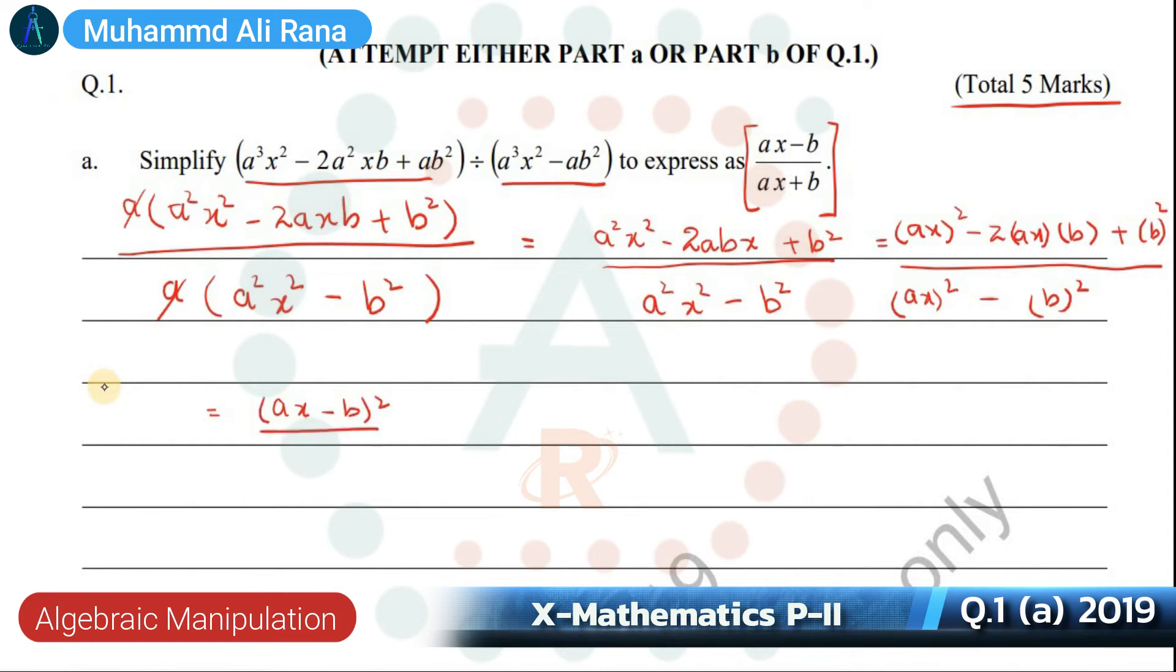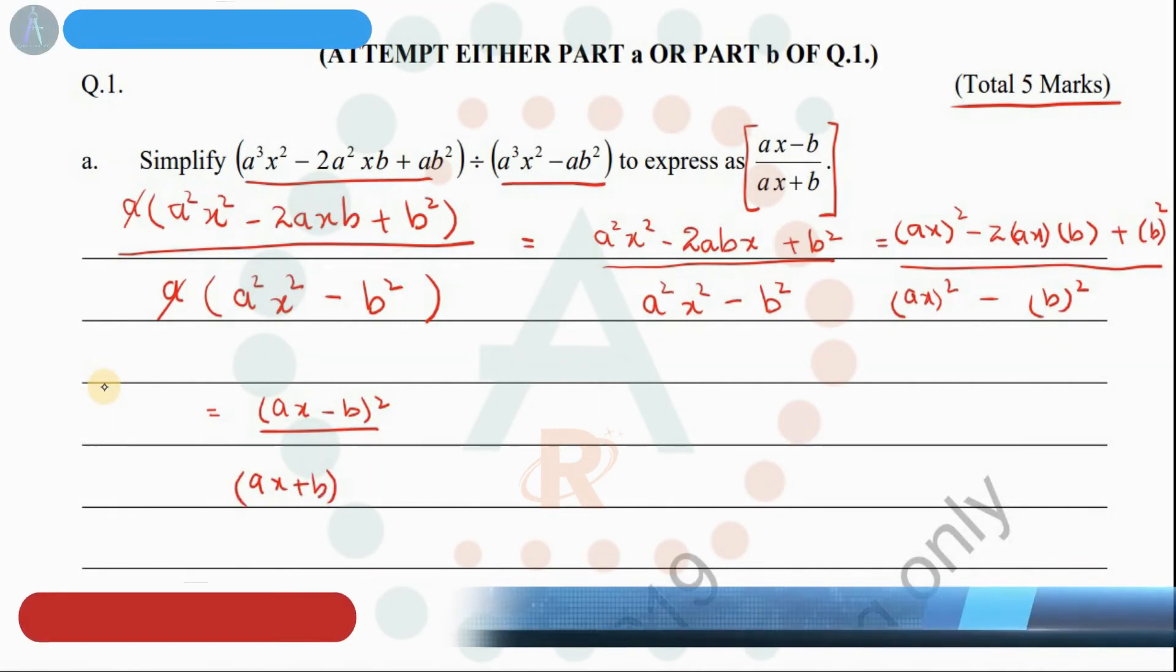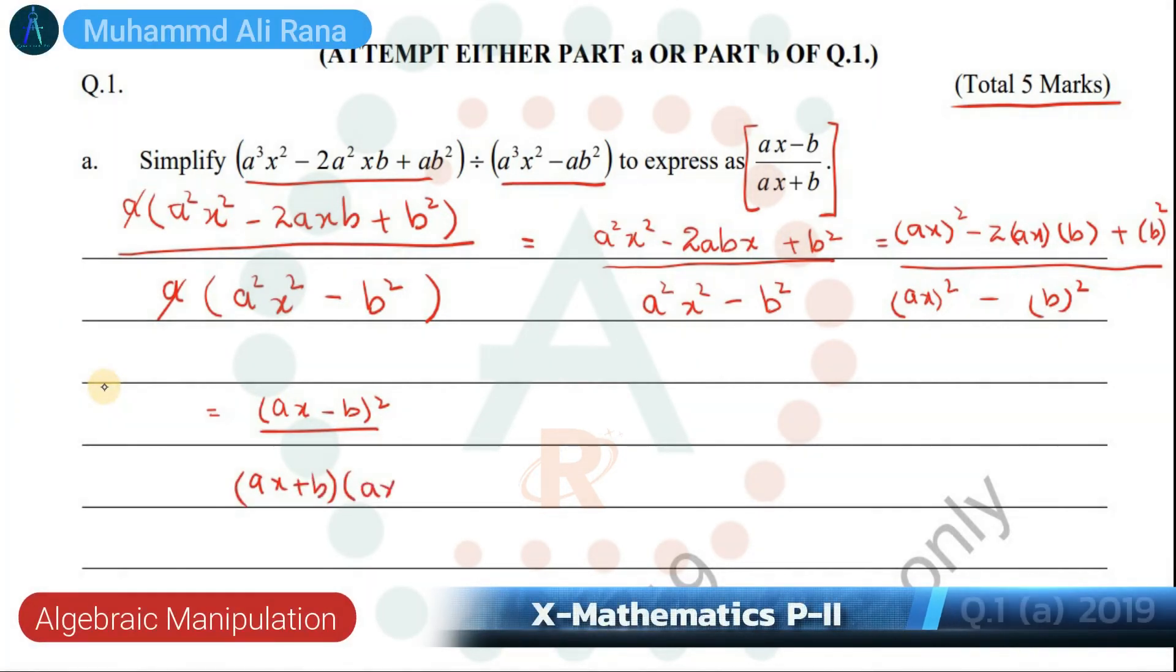Divided by AX plus B and AX minus B. We apply the difference of squares formula to the denominator. From numerator and denominator we have AX minus B, which will be cancelled out.